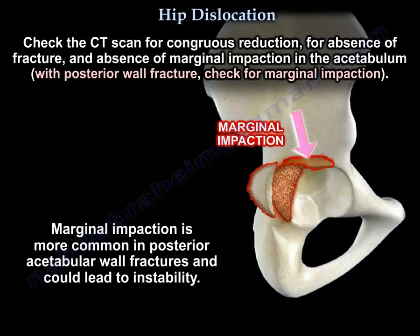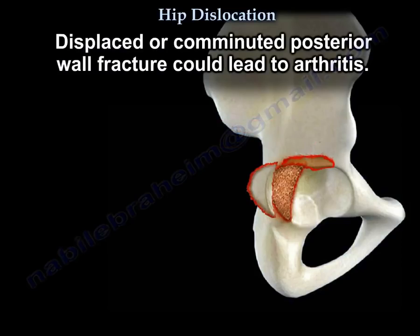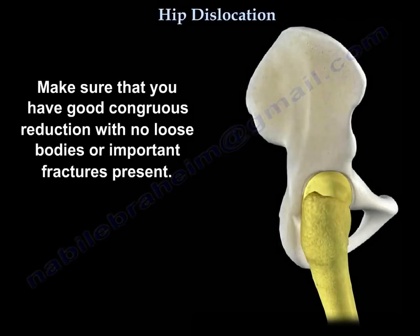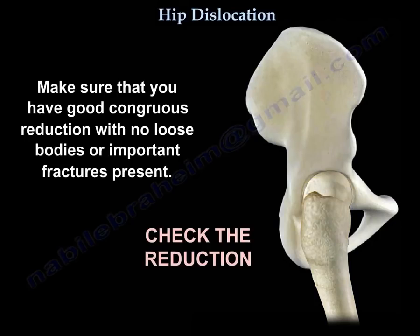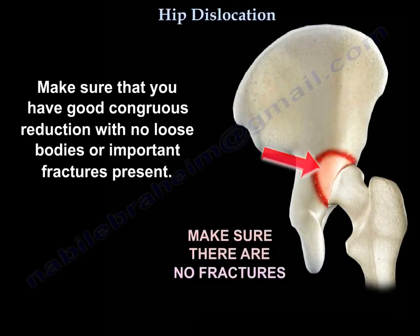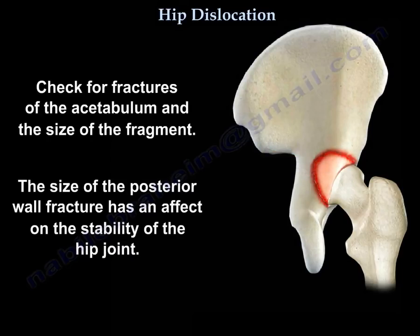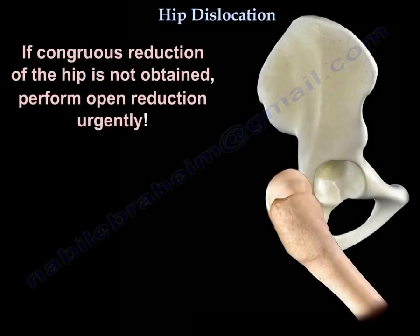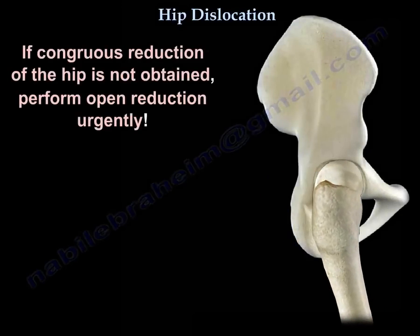Marginal impaction is more common in posterior wall fractures and can lead to instability. Displaced or comminuted posterior wall fracture could lead to arthritis later on. Make sure you have a good congruent reduction with no loose bodies or important fractures present. The size of the posterior wall fracture has an effect on the stability of the hip. If congruent reduction of the hip is not obtained, perform open reduction urgently.